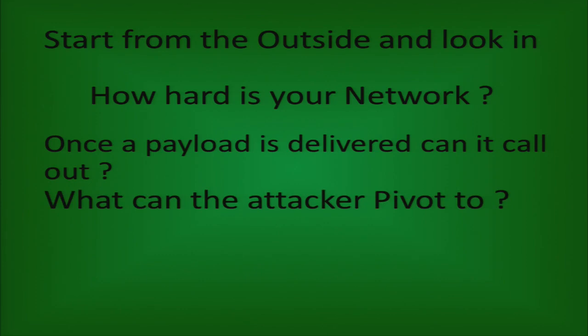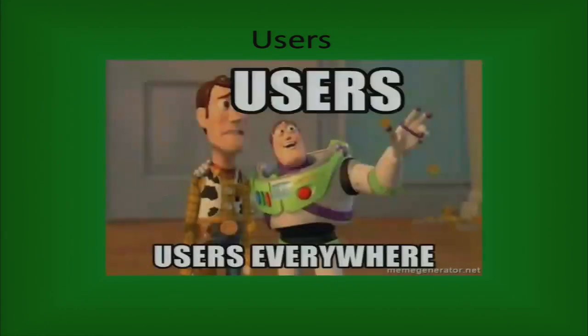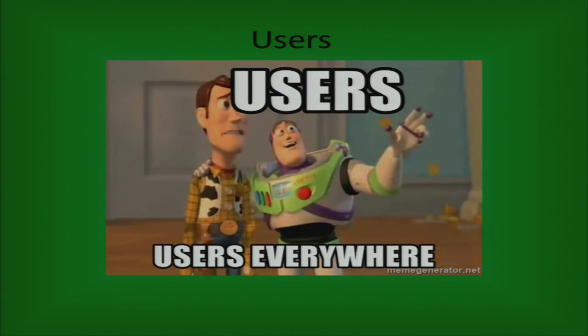An important thing I'm working on now is what can the attacker pivot to? If one machine gets compromised, does that necessarily mean everything else is compromised? If you don't have local administration privileges, it severely limits what people can get to from that one compromised machine. And if you have your network segregated correctly, they may be able to get to part but not all. At the end of the day, it really comes down to your users.